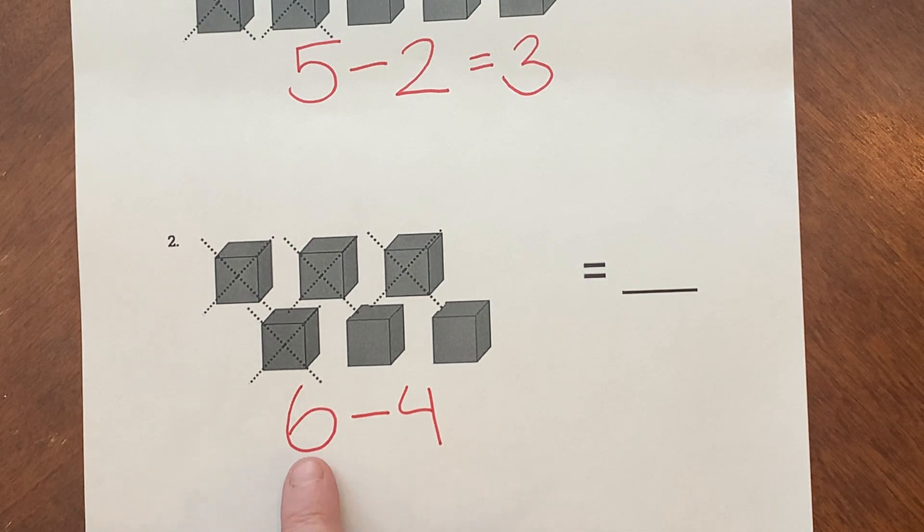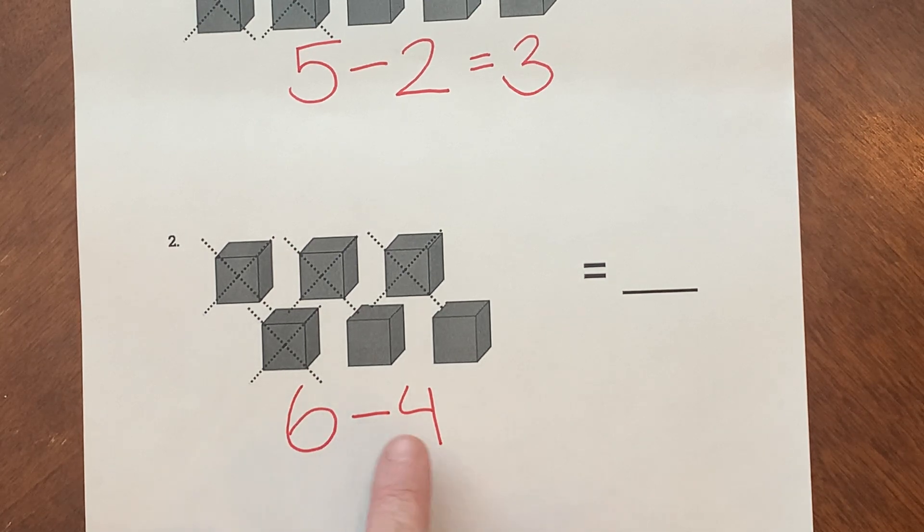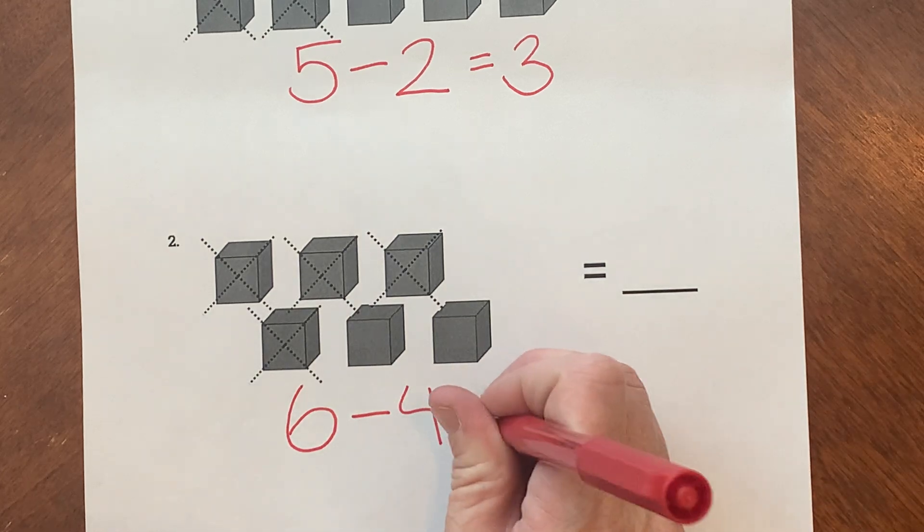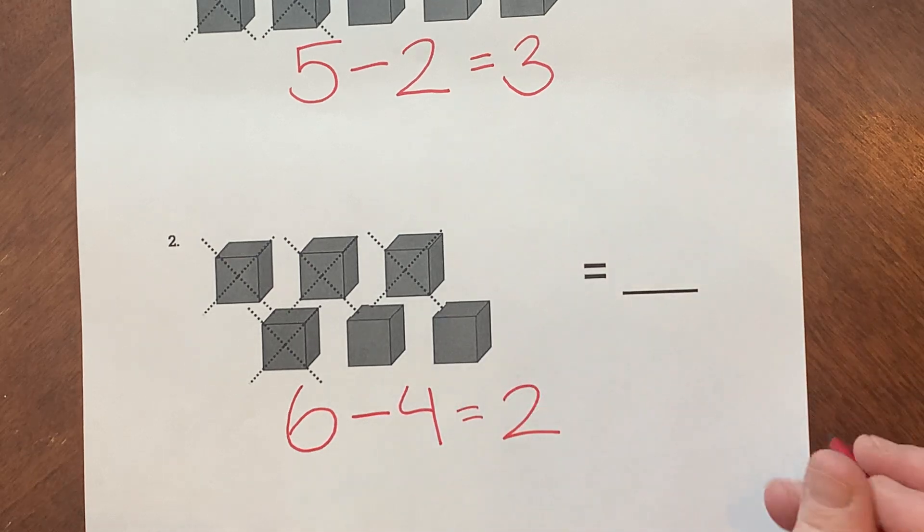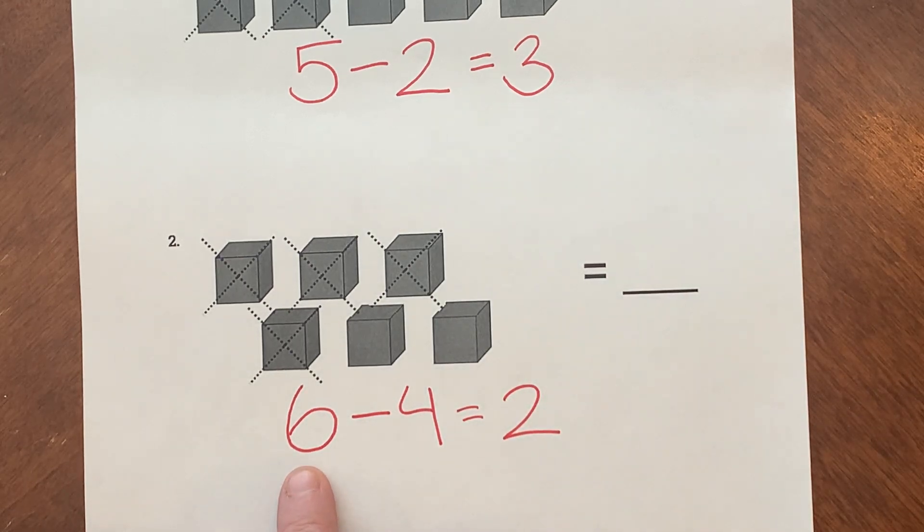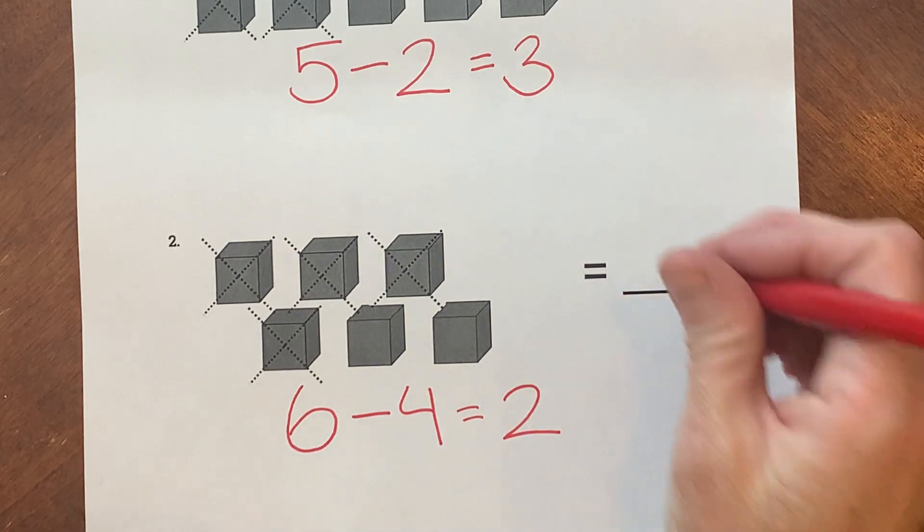So what do we have? We have six blocks subtract four blocks equals how many blocks are left? 1, 2. So our equation says six blocks subtract four blocks equals two blocks.